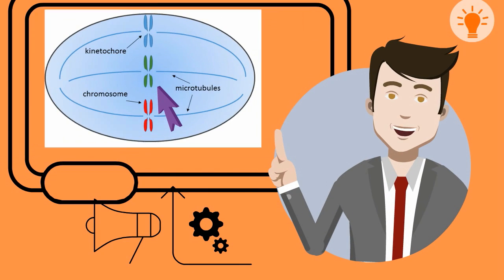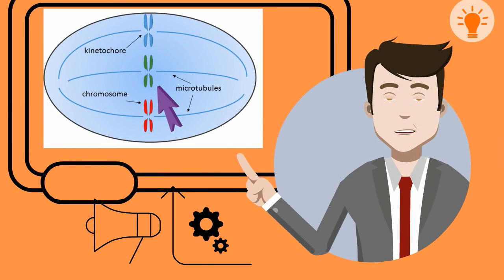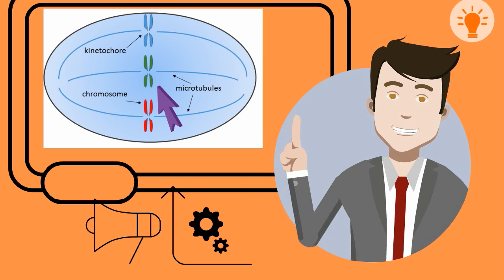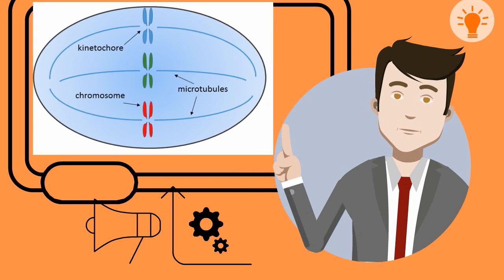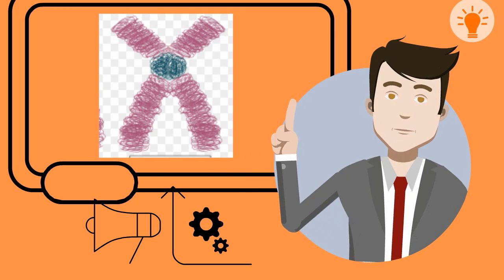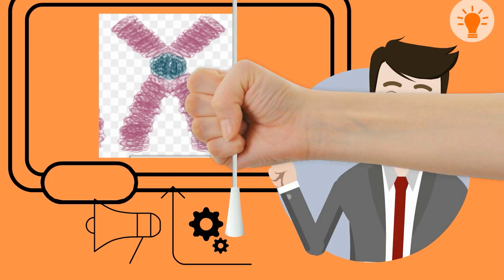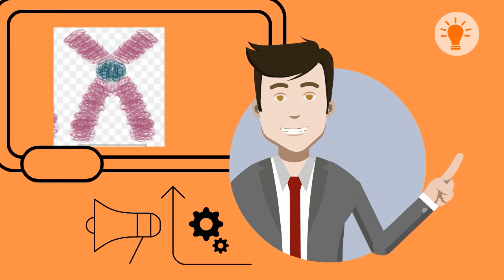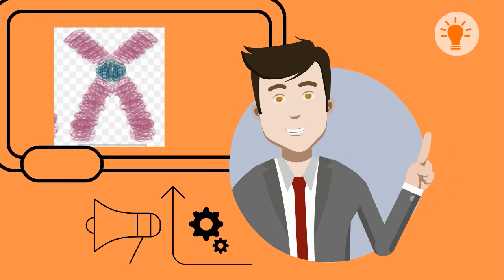the sister chromatids, which are aligned at the equator of the cell, begin to pull apart. These sister chromatids are created during interphase. What happens is that a single chromosome is duplicated into two copies and then are joined together by a centromere.